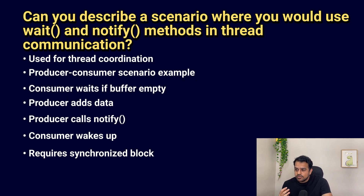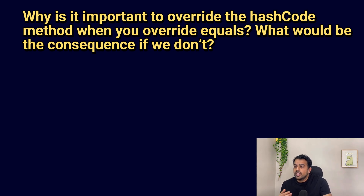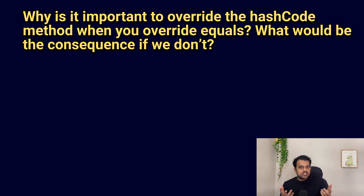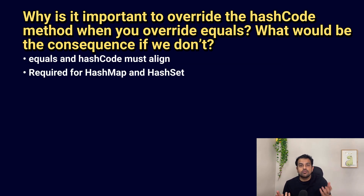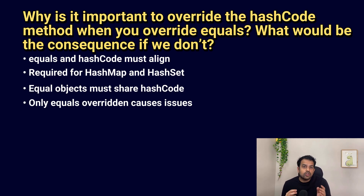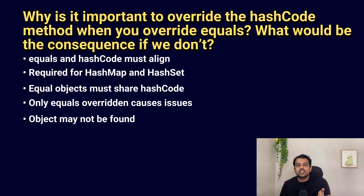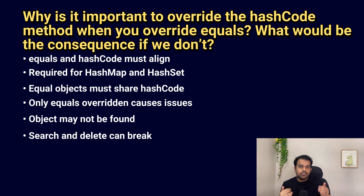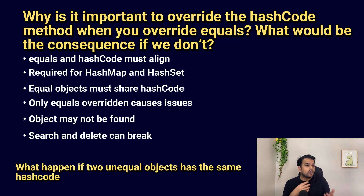The next question is: why is it important to override hashCode() when you override equals(), and what are the consequences if you don't? equals() and hashCode() must be consistent for HashMap, HashSet, and Hashtable to work correctly. If two objects are equal per equals(), they must have the same hash code. If you override equals() but not hashCode(), the object may not be found in hash-based collections, breaking search, store, and delete operations.